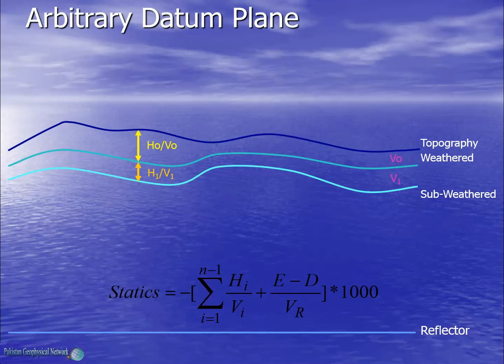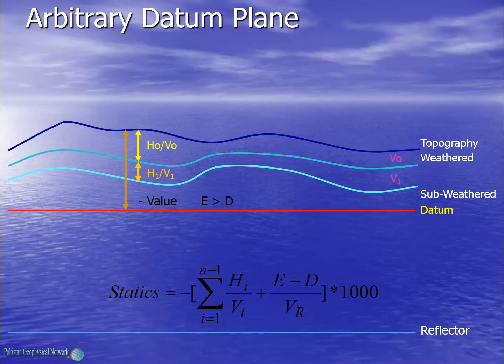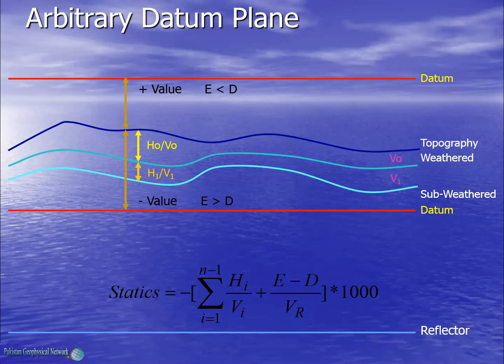The selection of the datum plane is arbitrary. If it is selected below the elevation and weathered layer, then since elevation is at a higher altitude than the datum, statics will have a minus value, which means the travel times from the landmass above the datum plane are to be removed. On the other hand if the datum plane is above the elevation, then elevation is less than datum and statics will be positive, implying additional times need to be added to each trace according to the elevation. In this way each trace will finally have the same start time. If seismic surveys have been previously carried out in the same area, the datum plane and replacement velocity of those surveys should be used in order to avoid mismatch issues between seismic data of different vintages.